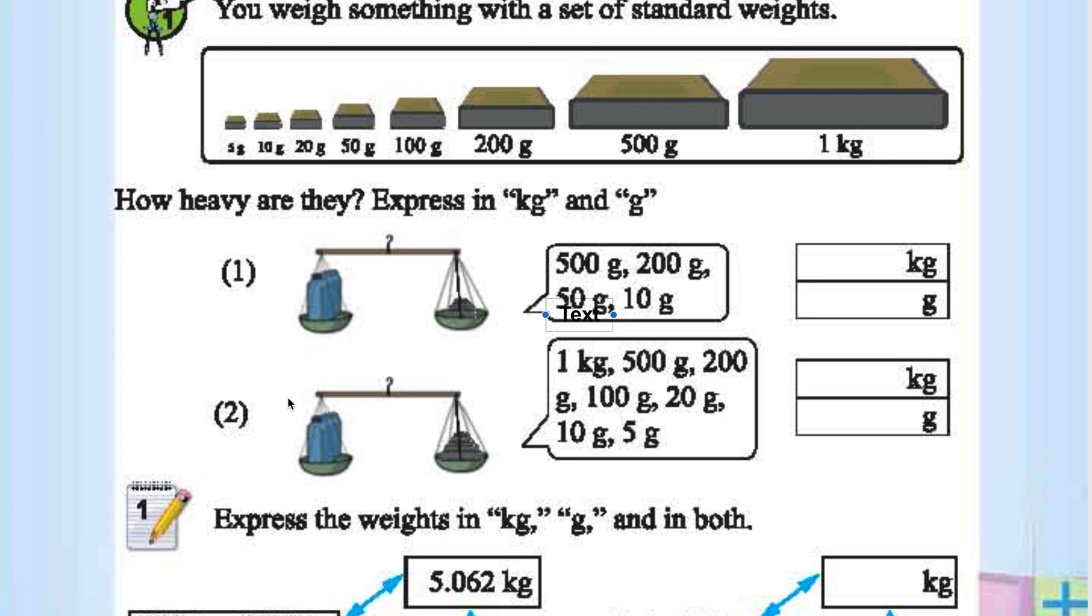760 grams is 0.76 kg. In grams it is 760 grams.